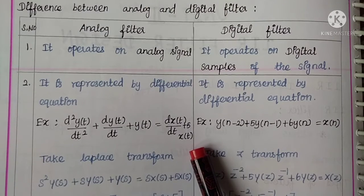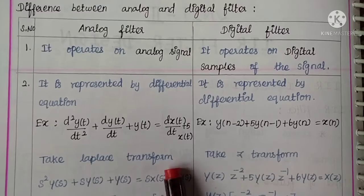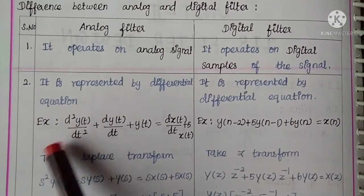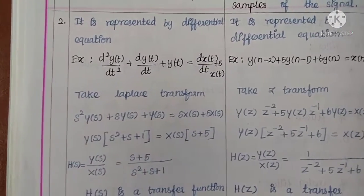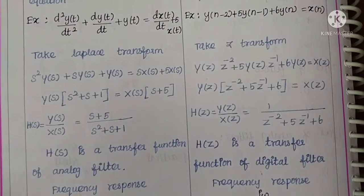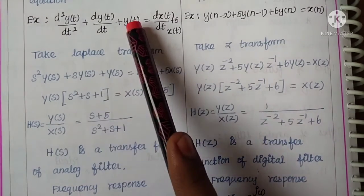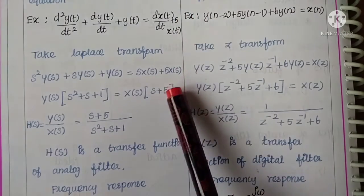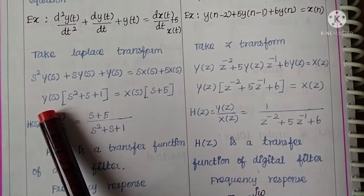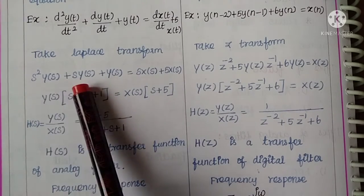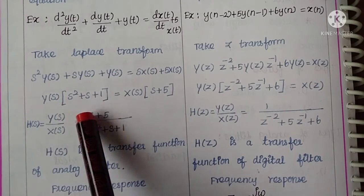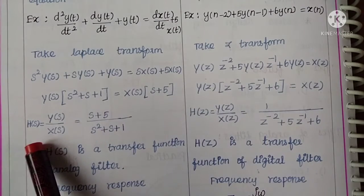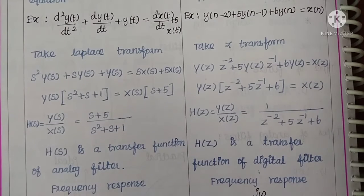To convert the differential equation to a transfer function, we take the Laplace transform on both sides. d²y(t)/dt² becomes s²Y(s), dy(t)/dt becomes sY(s), and dx(t)/dt becomes sX(s), and 5x(t) becomes 5X(s). Combining Y(s) terms gives us (s² + s + 1)Y(s), and combining X(s) terms gives (s + 5)X(s). So H(s) = Y(s)/X(s).